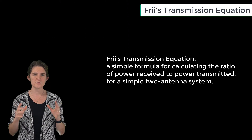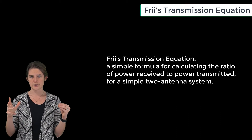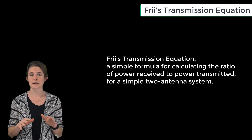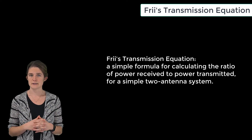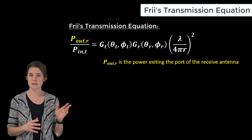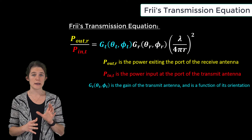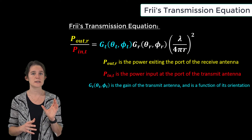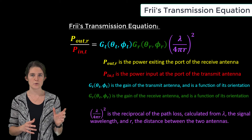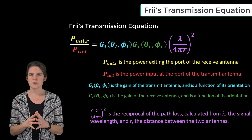The Friis transmission equation is a simple formula for calculating the ratio of power received to power transmitted for a two-antenna system. It makes a few simplifying assumptions but is always a good place to start when calculating antenna system gain. This formula is stated as the ratio of power exiting the receive antenna to power input at the transmit antenna, equal to the gain of the transmit antenna times the gain of the receive antenna times lambda over 4 pi r squared, where lambda is the signal wavelength and r is the distance between the two antennas.